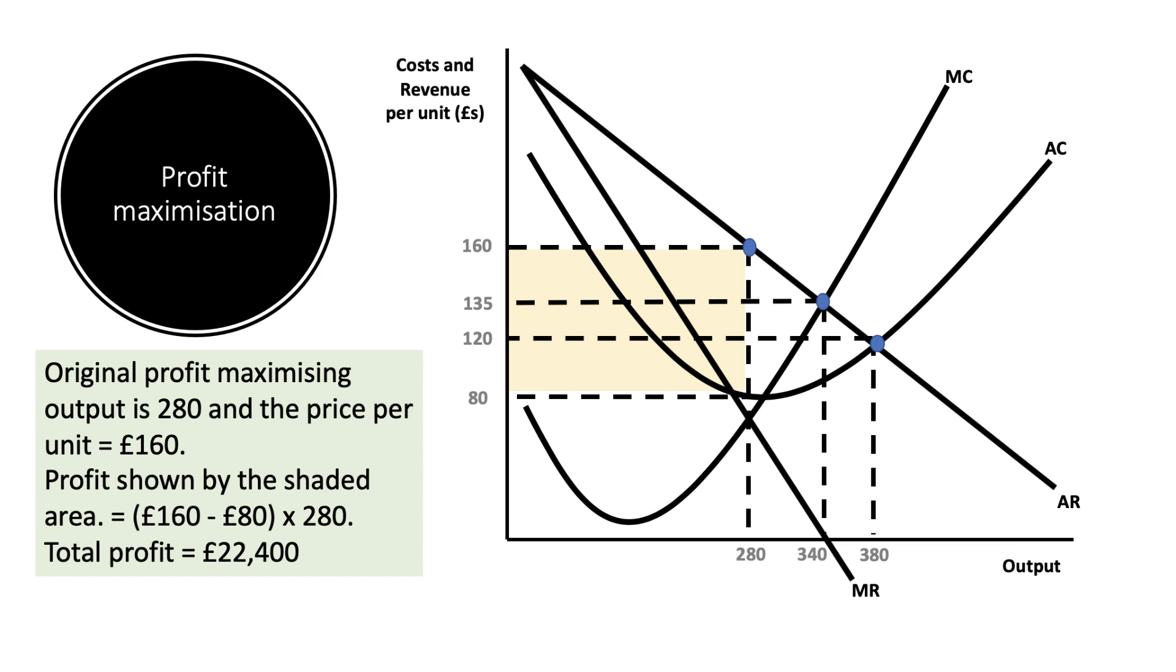The original profit maximizing output is assumed to be 280, and the price per unit is £160 per unit. We can show the total profit. It's the difference between price and average cost, which is assumed to be a profit of £22,400. The price per unit is £160, the cost per unit is assumed to be £80 per unit.